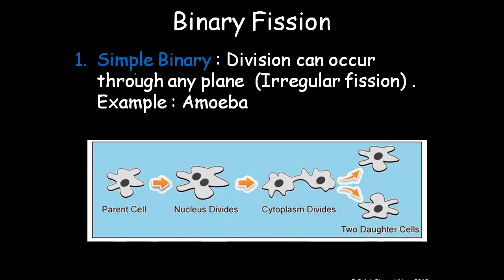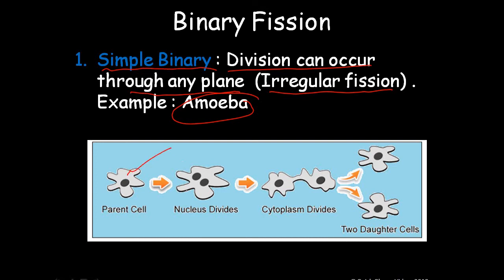Binary fission is of different types. First is simple binary fission, where division can occur through any plane — it is not along a regular axis. This is mostly found in amoeba. You can see that the parent cell's nucleus divides, then the cytoplasm divides, and two daughter cells are formed.